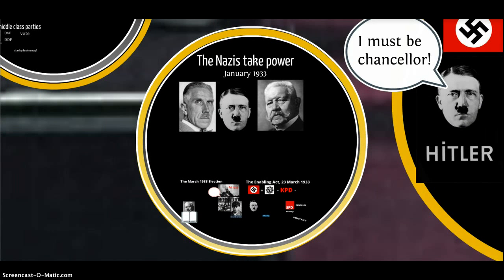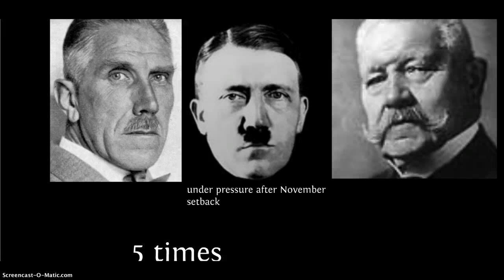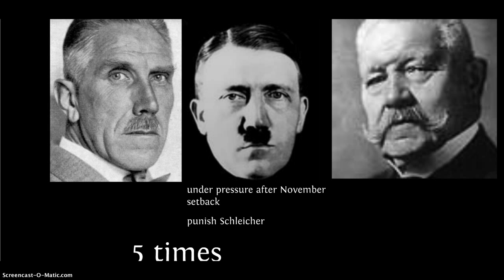In January 1933, Hitler was appointed chancellor. Papen met with Hindenburg five times, along with big business interests, trying to persuade him to make Hitler chancellor with Papen as vice-chancellor — and this eventually happened. Hitler himself was under pressure after the November setback — the Nazi vote had declined, and voters were annoyed that despite giving him a large share of the vote, he simply seemed to be refusing to cooperate and form a meaningful part in the government. He was also under pressure from within the Nazi party. Being appointed chancellor was not too bad, even though the majority of cabinet members were not Nazi. He also wanted to punish Schleicher for trying to split the Nazi party.